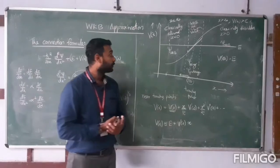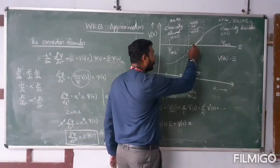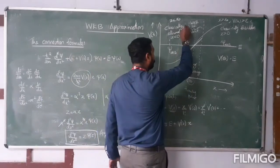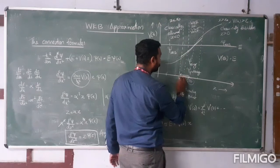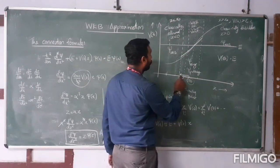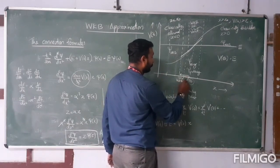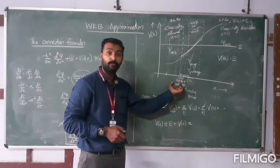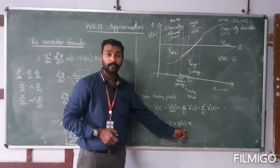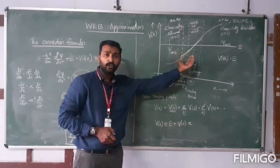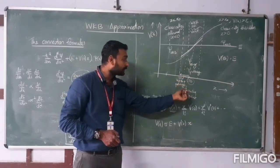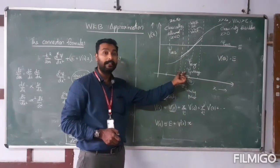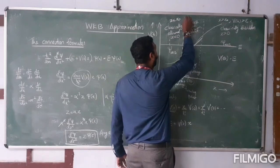So in that region, both the WKB approximation and the patching wave function are valid. When we use the patching wave function — applicable if the linearized potential is extended to more extent — then in those regions WKB is also valid. So the WKB wave function and the patching wave function will be equal in this region, and therefore we can call it the overlap region.